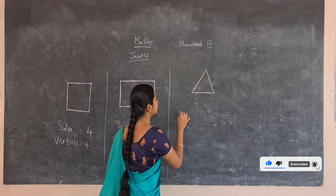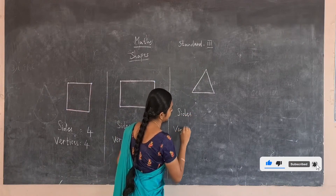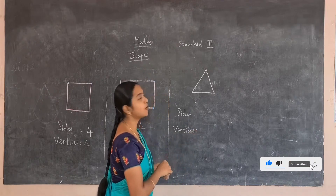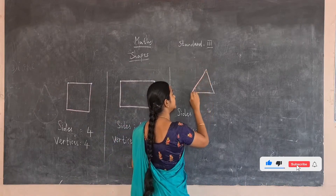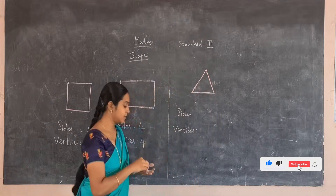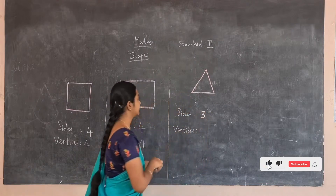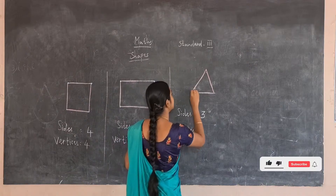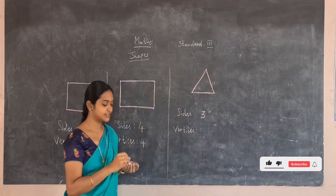Now let us find the sides and vertices for the triangle. Count how many lines are there in the triangle: 1, 2, 3. There are 3 lines in the triangle, so there are 3 sides in the triangle.